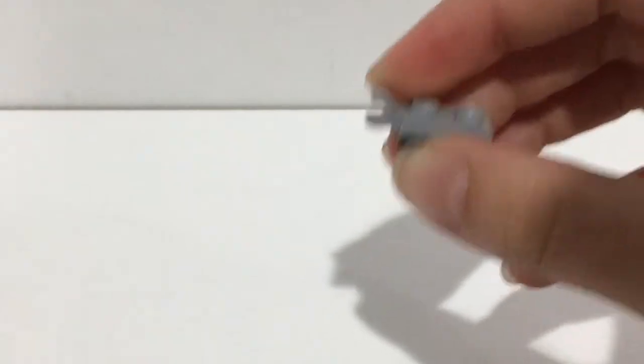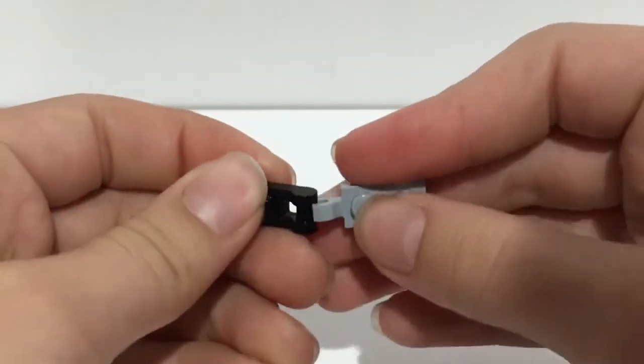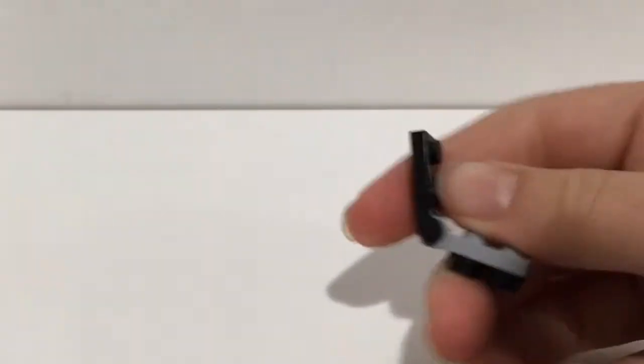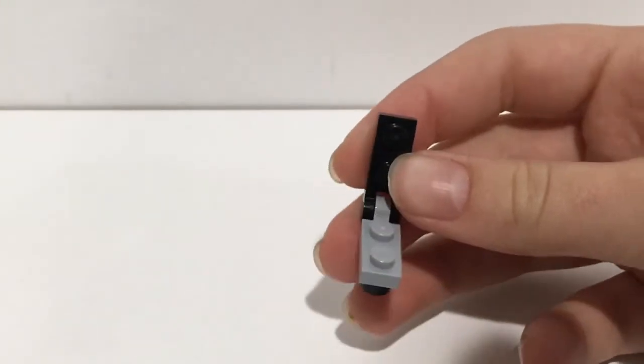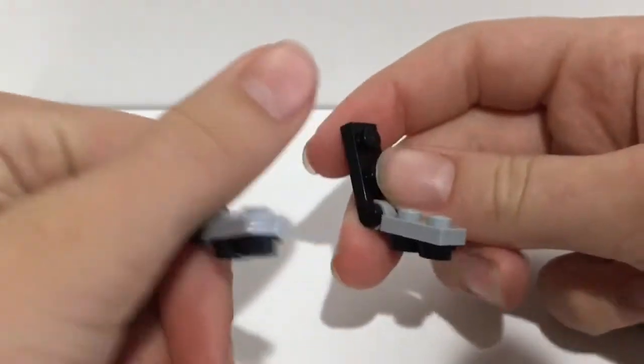Then you're gonna take your black part over here and clip it together just like that, so it has an angle like that. And then you're gonna do this two times.